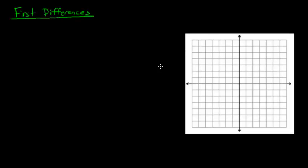We have looked before at a couple of ways to tell whether a relation is linear. If it is graphed like this, and it is a straight line, then you know it is linear, because it has a line in it.